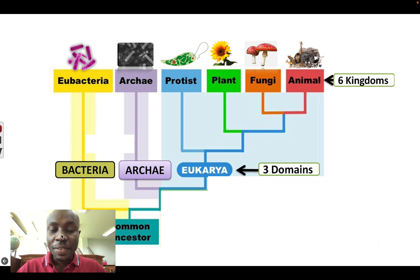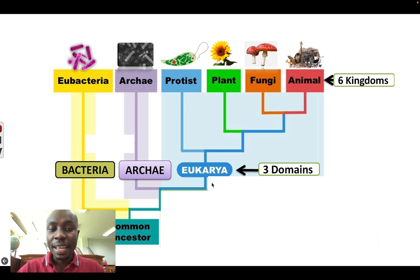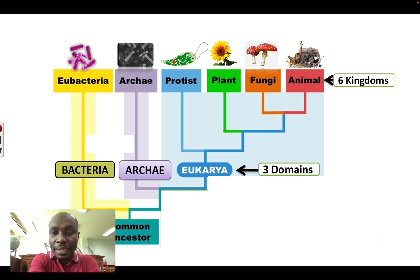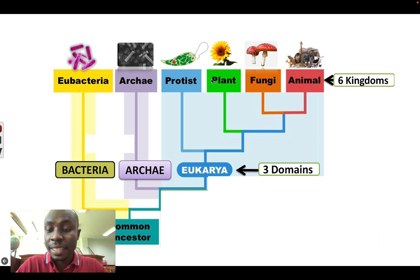We already know that all life is grouped into three domains: bacteria, archaea, and eukarya. These three domains are also divided into six kingdoms. We have looked at different kingdoms, and today we're going to look at the plant kingdom, kingdom Plantae.